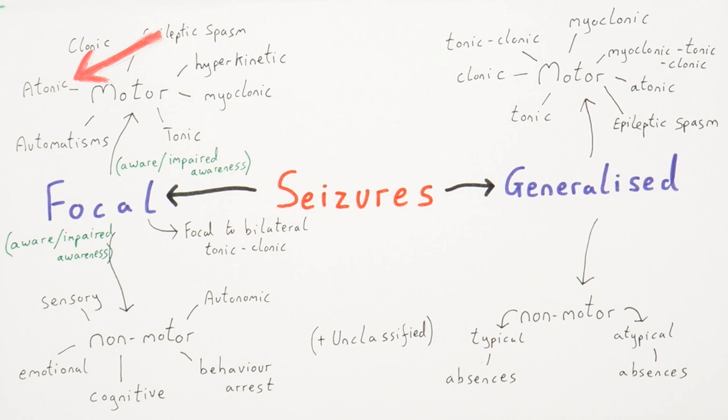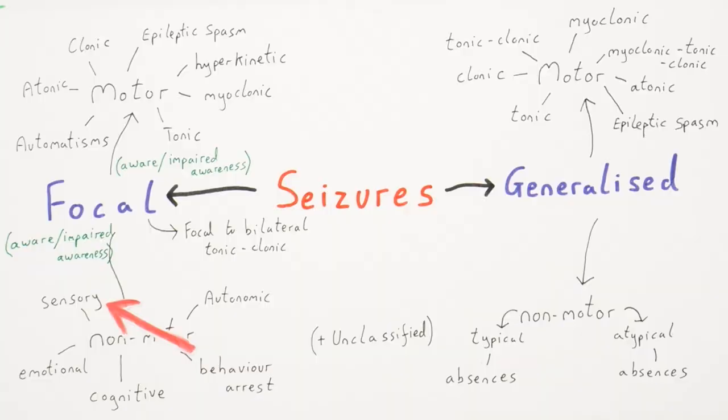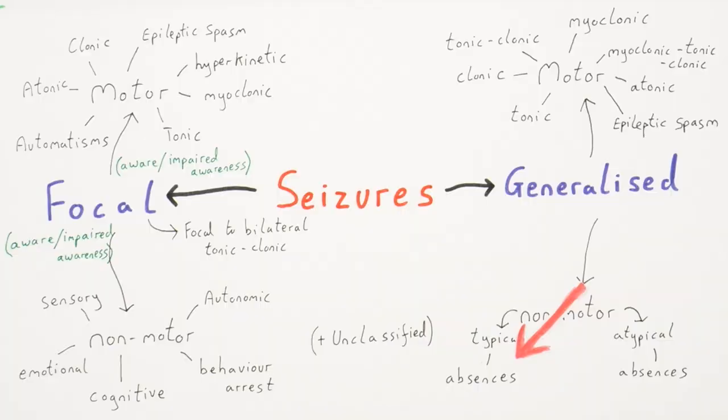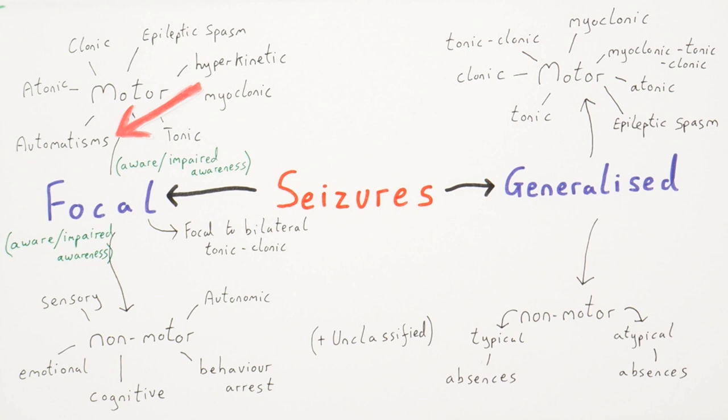There are cognitive seizures that can alter a person's thinking, memory, or perception. There are atonic seizures or drop attacks causing a sudden loss of muscle tone, causing the person to fall down or collapse. There are sensory seizures that can affect senses such as sight, touch, and smell, causing people to perceive senses and smells that aren't actually present. There are also absence seizures that involve a brief lapse in consciousness, typically lasting a few seconds, where the person can seem unresponsive and stare blankly into space. There are automatisms — repetitive actions like lip smacking, fidgeting, and chewing — and there are more complex actions like walking and running.